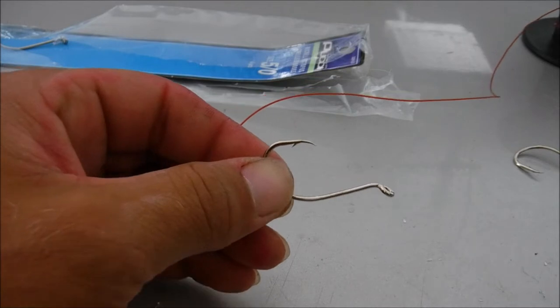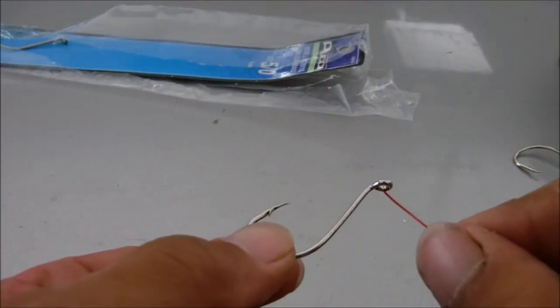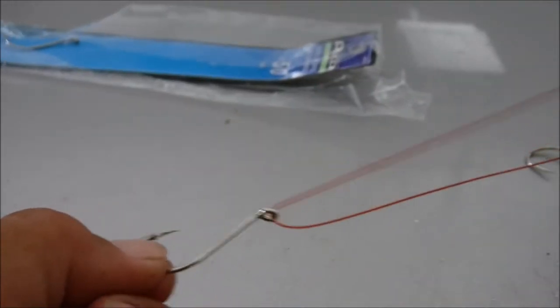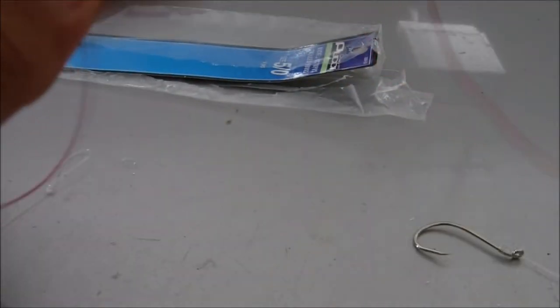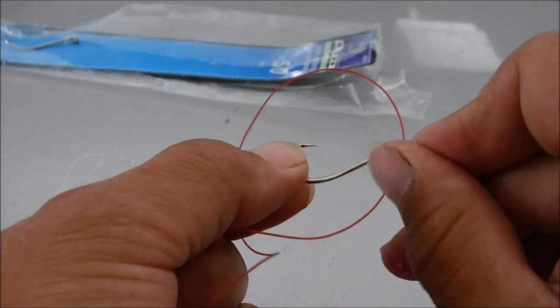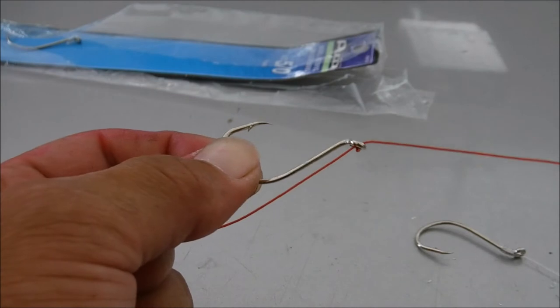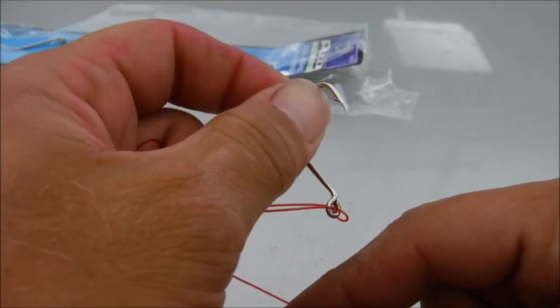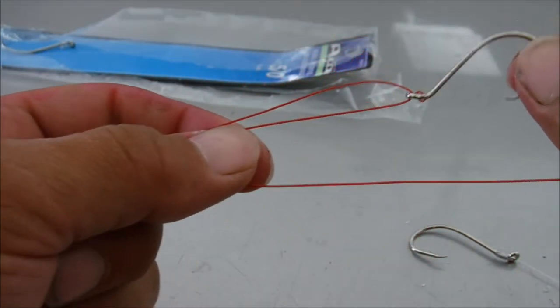There's our hook. We go through our hook twice. One time we went through it, now we're going to go through it again. We went through our hook twice. Now we're going to bring that same line back here and pull our hook forward. See that.